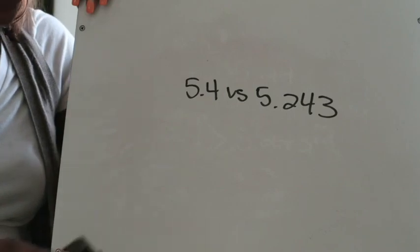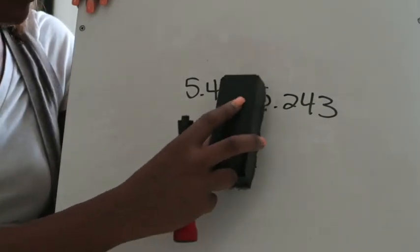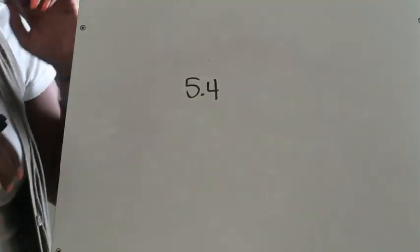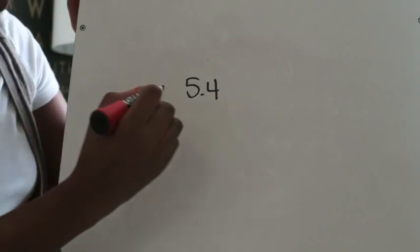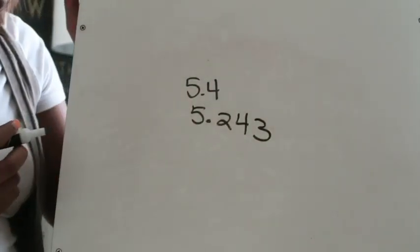So what we're going to do is we're going to compare five and four tenths to five and two hundred and forty three thousandths so that I can show you how you know for sure that five and four tenths is actually the bigger of the two. So first you want to line up your decimals by their decimal point.